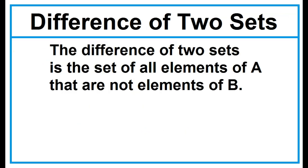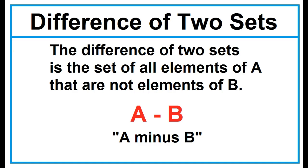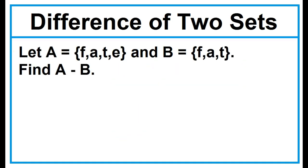Difference of two sets. The difference of two sets is the set of all elements of A that are not elements of B. The symbol is read A minus B. Example: Given Set A and Set B, find A minus B. Find the element or elements in A not found in B. We have one, which is E. So A minus B is equal to a set containing E.